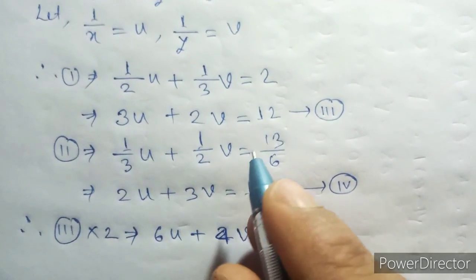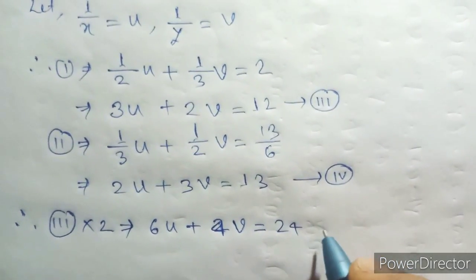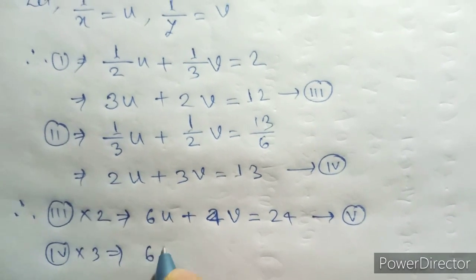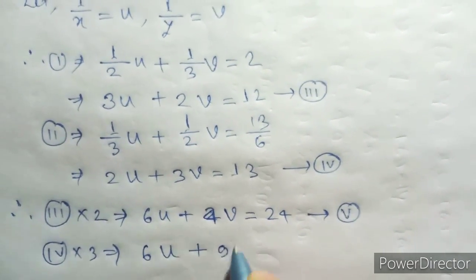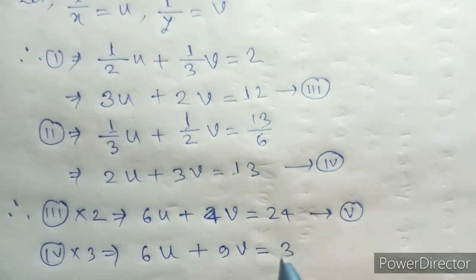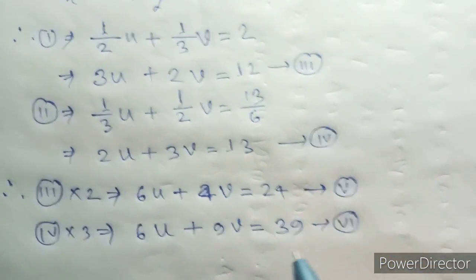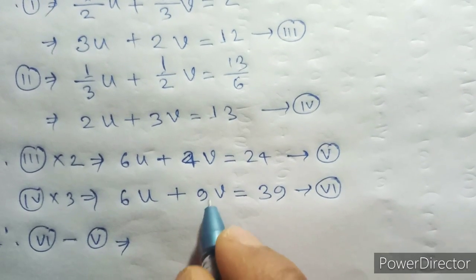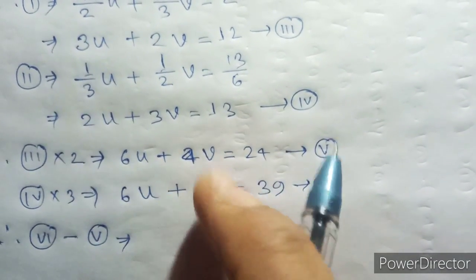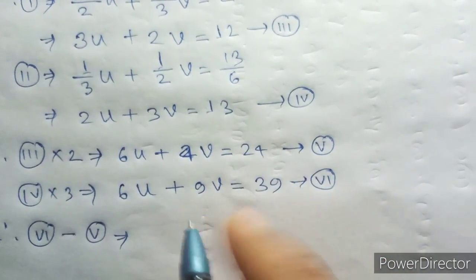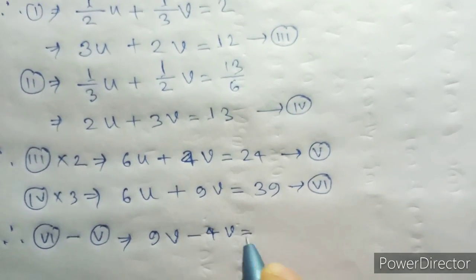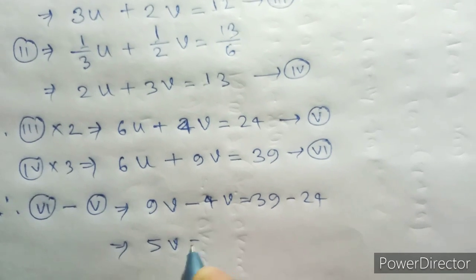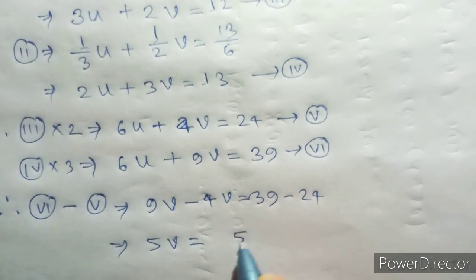3 into 2 implies 6 U plus 4 V equal to 2 into 12, so 24. This is equation number 5. Equation number 4 into 3 implies 6 U plus 9 V equal to 3 into 13, so 39. This is equation number 6. Equation 6 minus equation 5 implies 6 U plus 9 V, 6 U cancels, 9 V minus 4 V equals 39 minus 24.